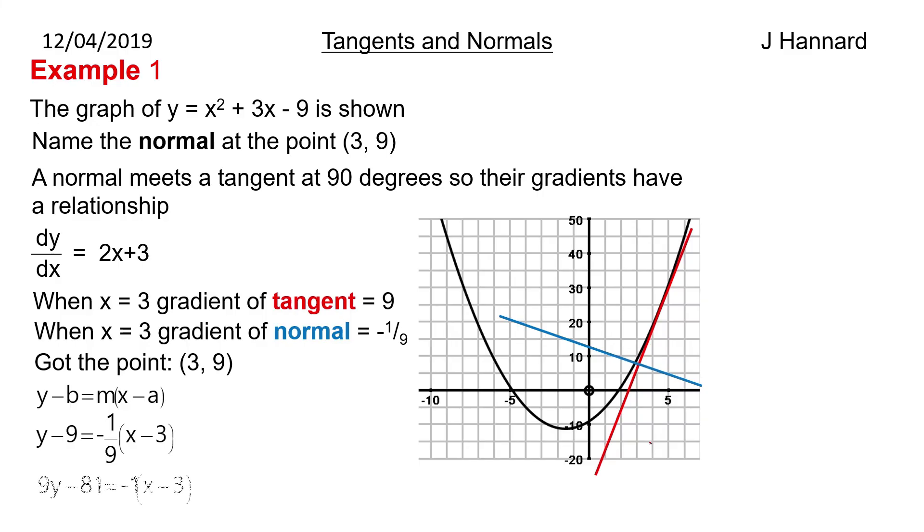First thing I would do there is times everything by 9. So we get 9y - 81 = -1(x - 3). So 9y - 81 = -x + 3. So 9y + x = 84. And that's the equation of the normal at the point (3, 9) for that particular curve.